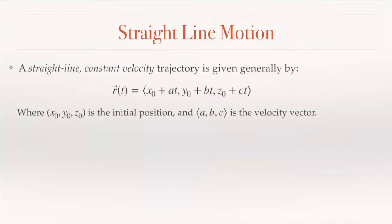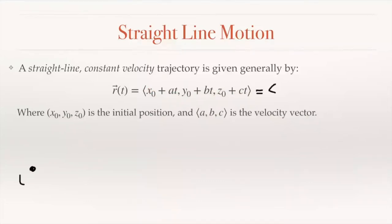A straight-line, constant-velocity trajectory is given generally by r(t) = (x₀ + at, y₀ + bt, z₀ + ct), where (x₀, y₀, z₀) is the initial position and (a, b, c) is the velocity vector. Notice that each component is like the standard line equation b + mx. We can write this as (x₀, y₀, z₀) + t·(a, b, c) — our initial position plus t times our direction vector.